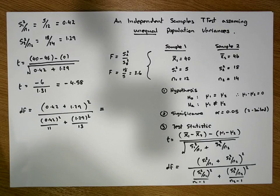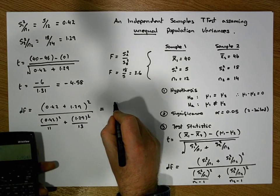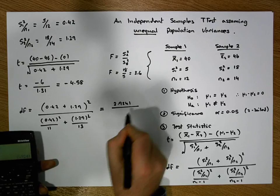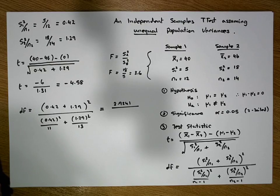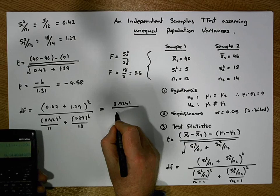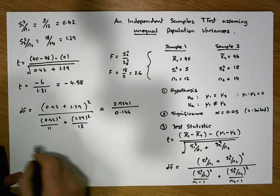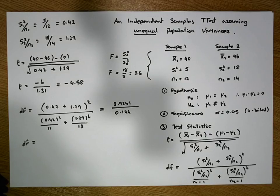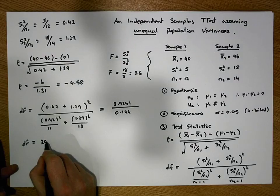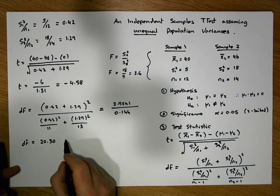When I calculate this: 0.42 plus 1.29 squared gives a value of 2.9241. That is to be divided by 0.42 squared divided by 11, plus 1.29 squared divided by 13, which gives us a value of 0.1440. So our degrees of freedom is 2.9241 divided by 0.144, which gives us approximately 20.3.